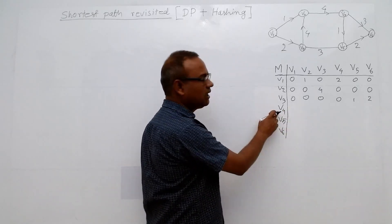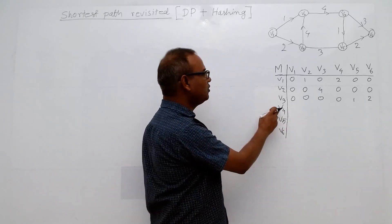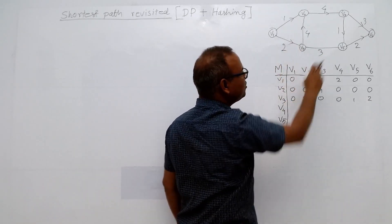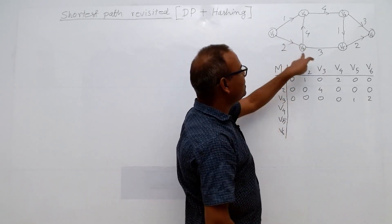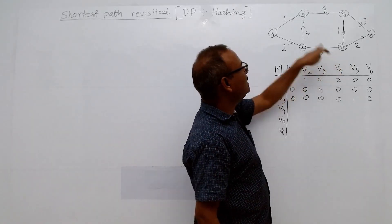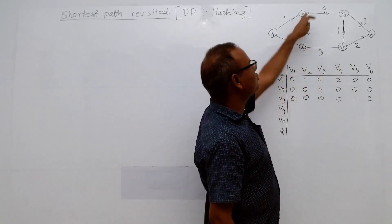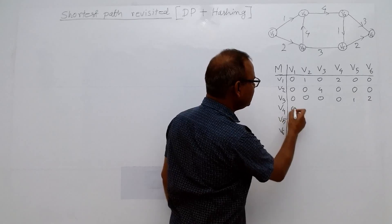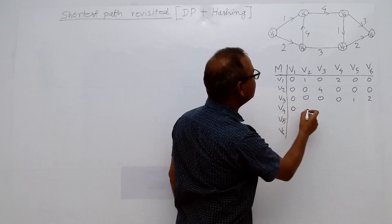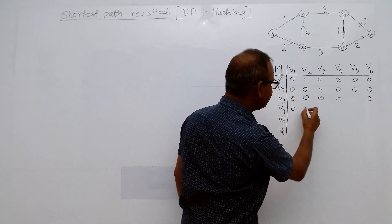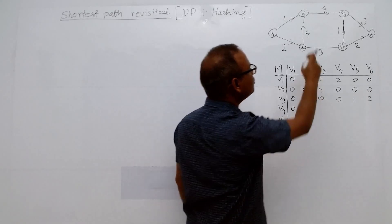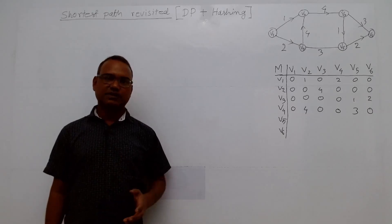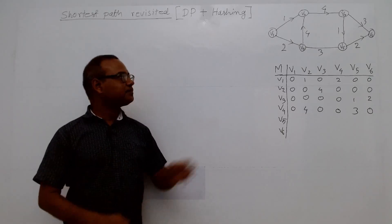For example, for V4, we check what edges go from V4. V4 to V5 has an edge, and V4 to V2 also has an edge. So V4 to V1 has no edge, and V4 to V2 has an edge with weight 4. We are creating the adjacency matrix this way.